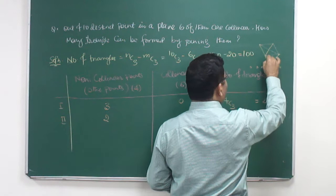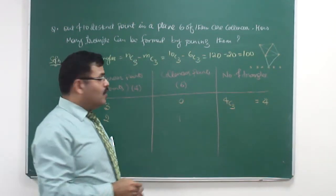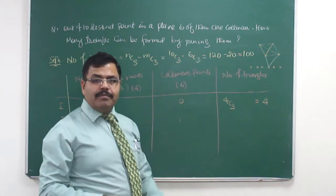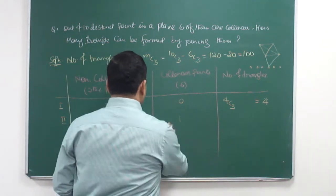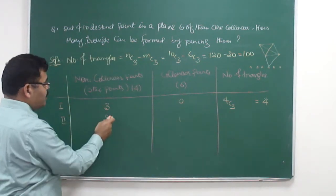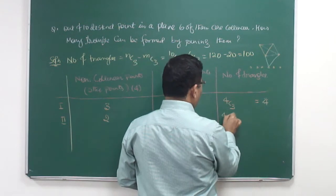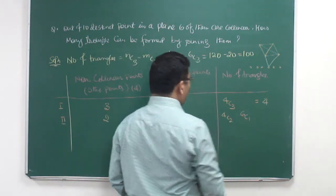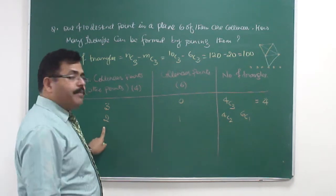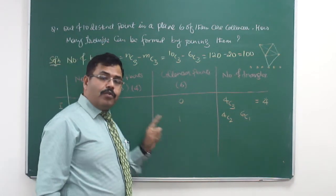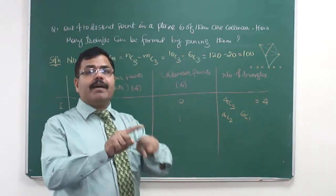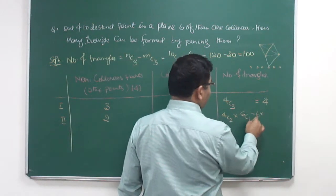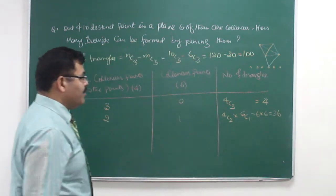If I take two points from non-collinear and one point from collinear, a triangle can be formed. The number of triangles in this case: two from four non-collinear can be selected in 4C2, and one from six collinear in 6C1. We multiply: 4C2 is 6, and 6C1 is 6, so 36 triangles can be formed this way.